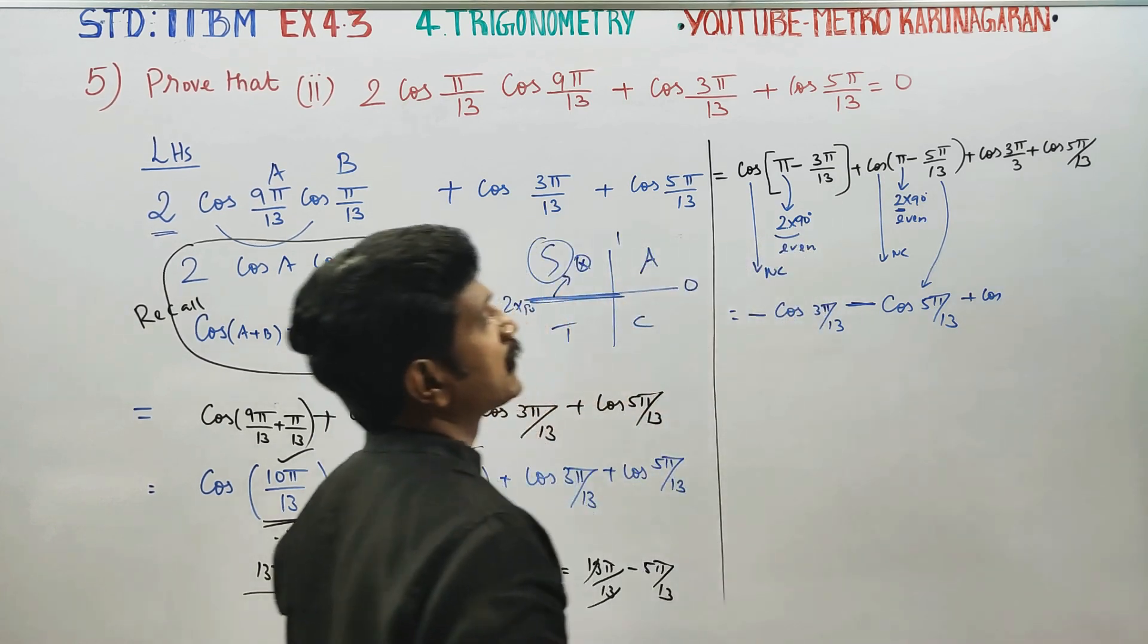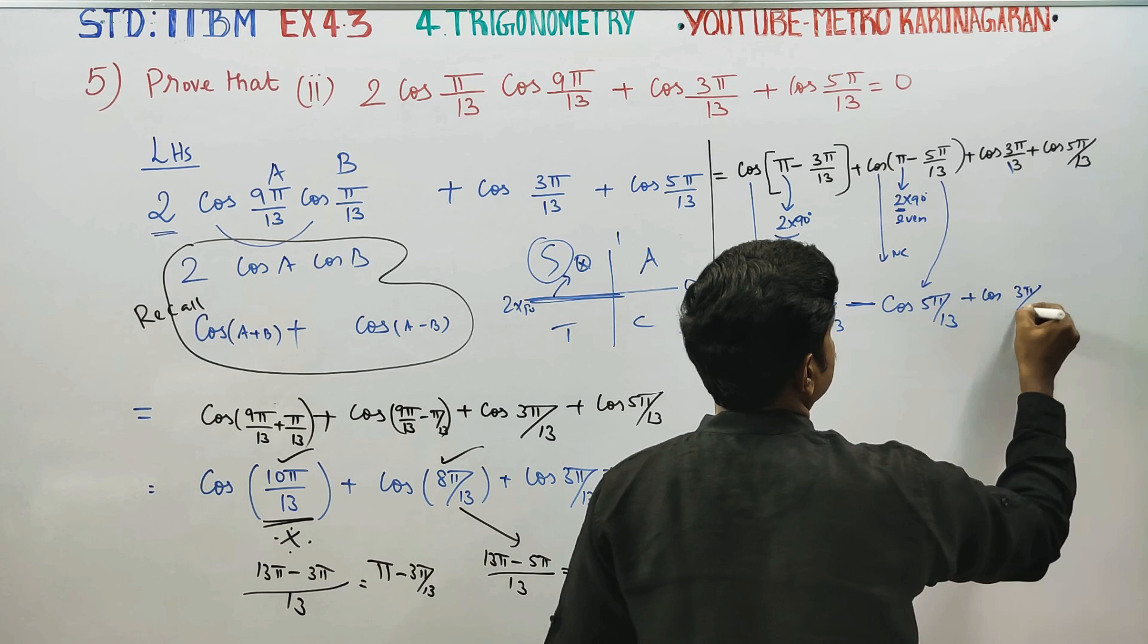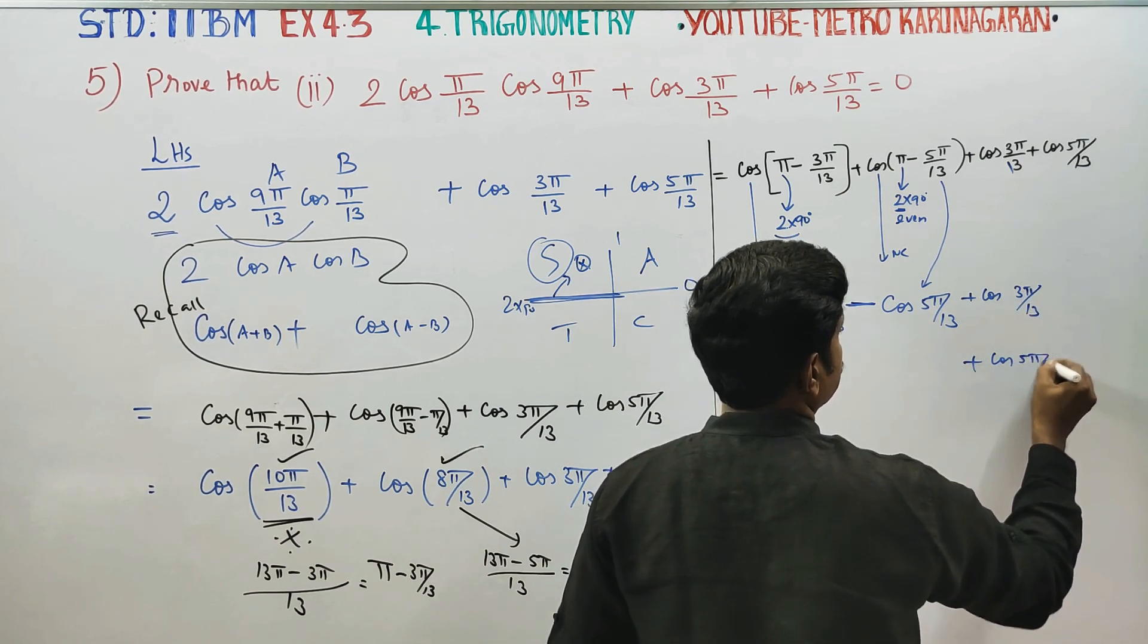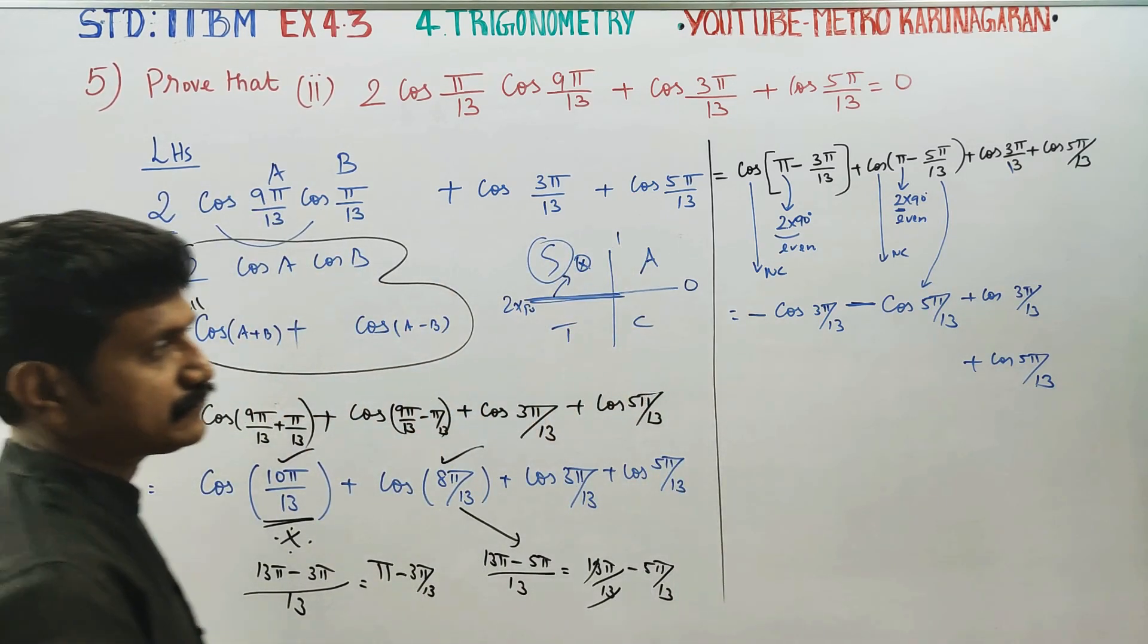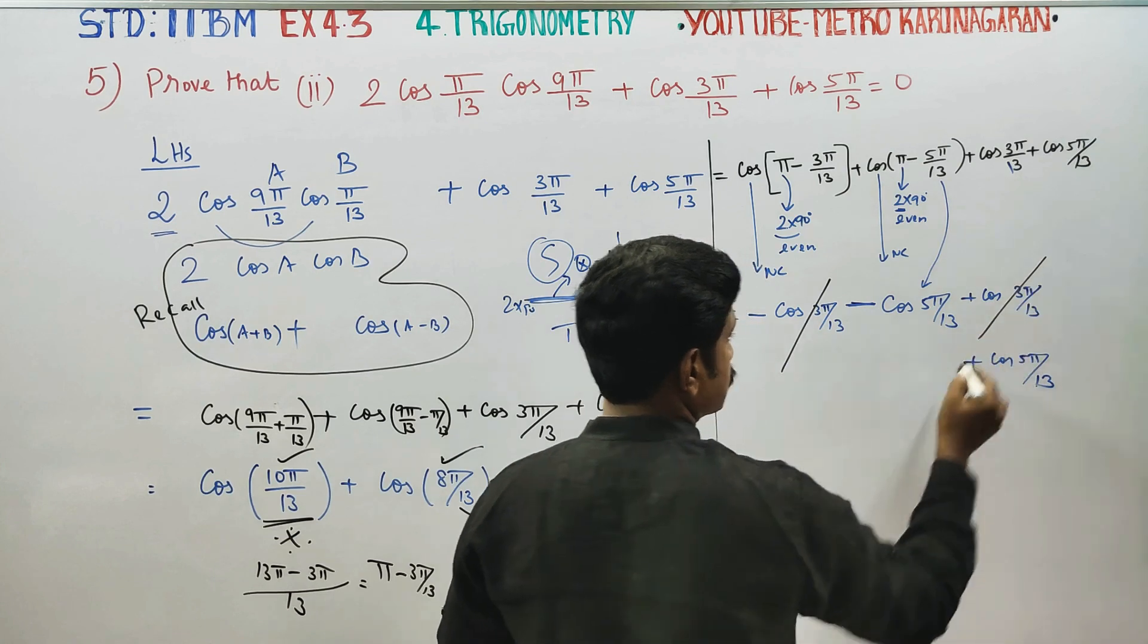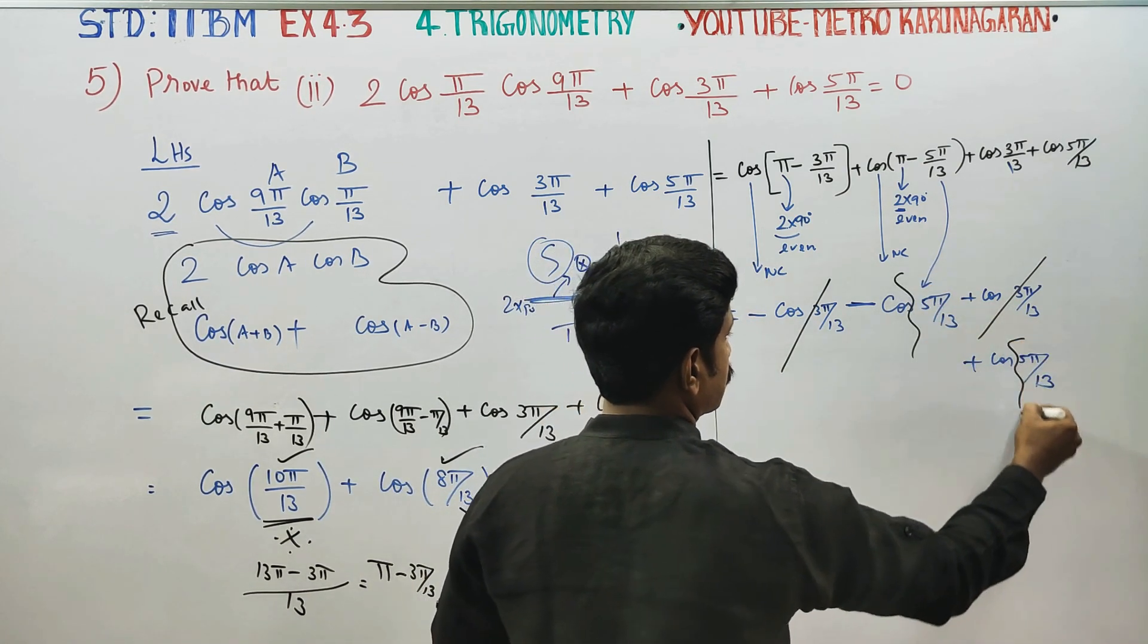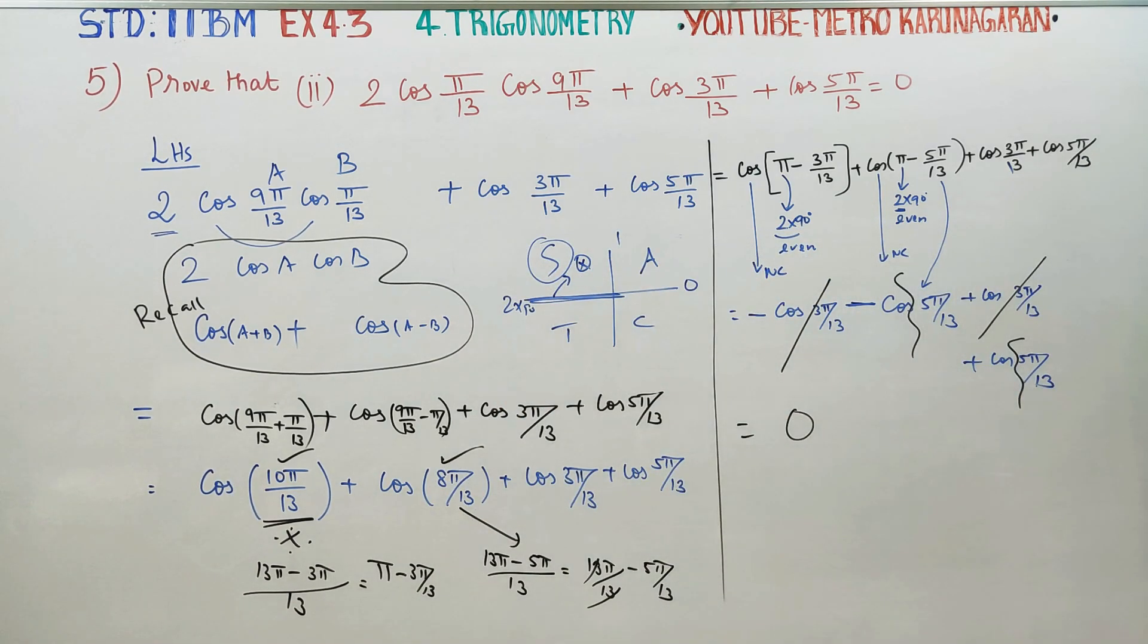cos 3 pi by 13 plus cos 5 pi by 13. I will cancel minus cos 3 pi by 13, minus cos 5 pi by 13. I will cancel. Your final answer will be 0. Thank you.